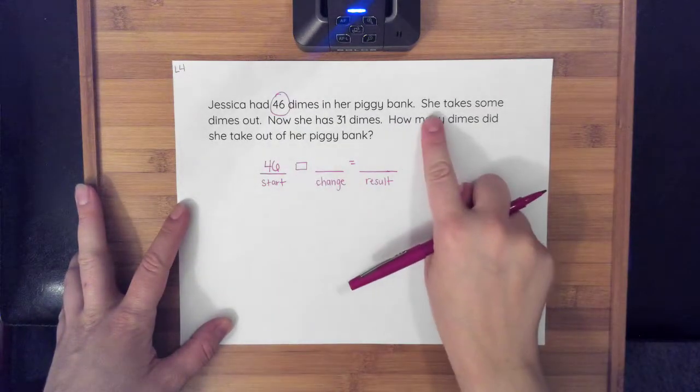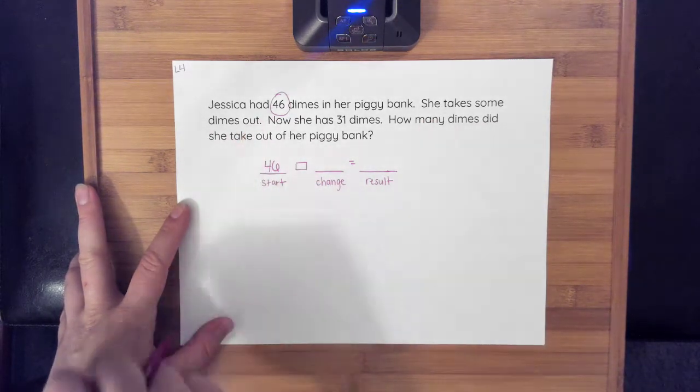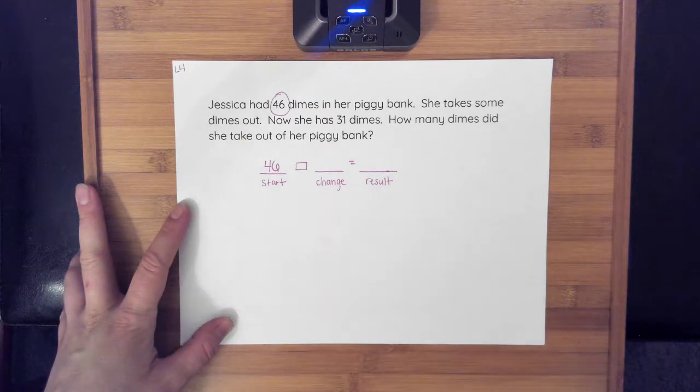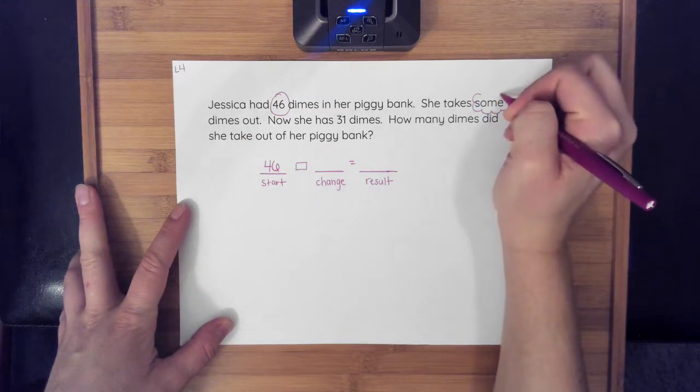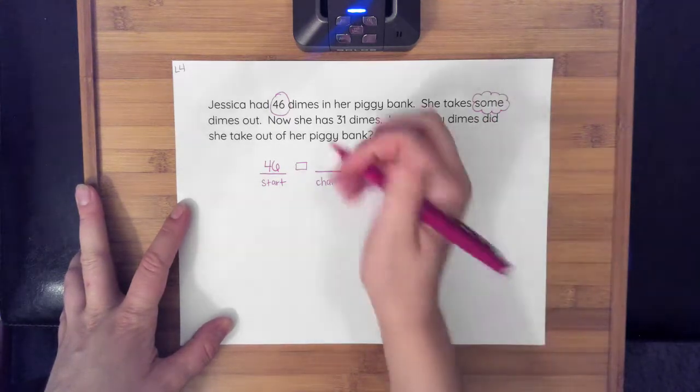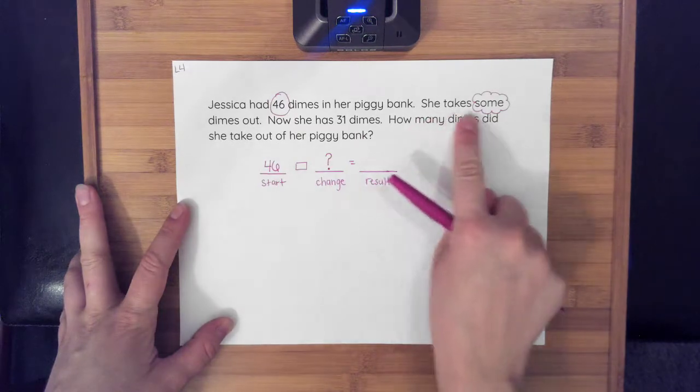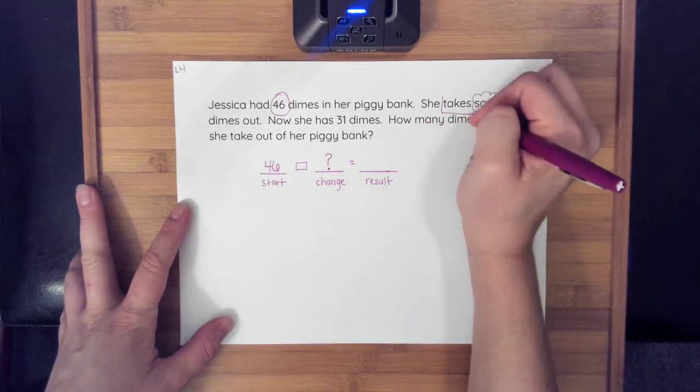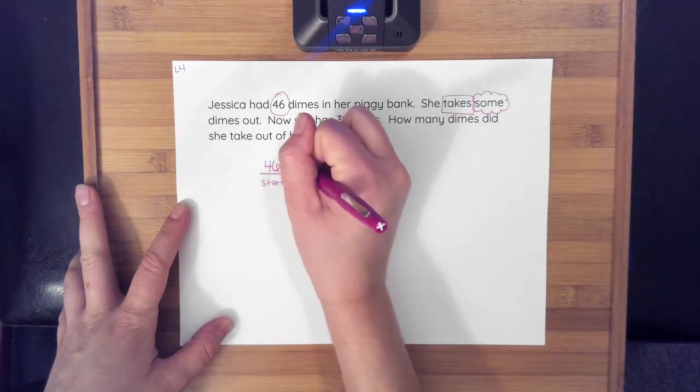Then the second sentence says she takes some dimes out. It doesn't tell me how many dimes she took out. So I don't know this sum. I'm going to put that my change is unknown. And I know if she takes some dimes away from the 46 she had, then that means I'm going to be subtracting.